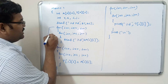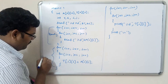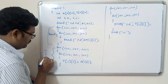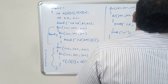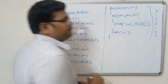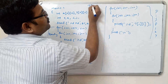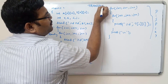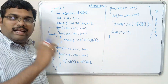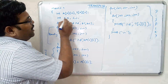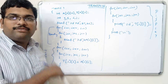So this is the complete logic: reading the elements, computing the transpose by swapping i and j indexes, and printing the result. This is a simple program to find the transpose of a given matrix. We read both the number of rows and columns, then apply the transpose logic.